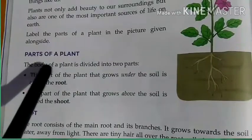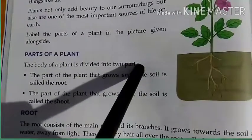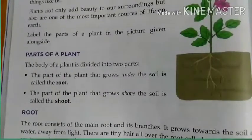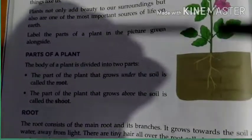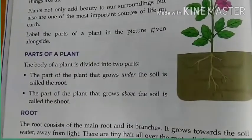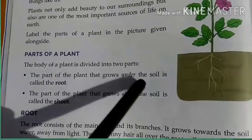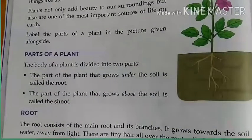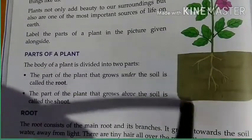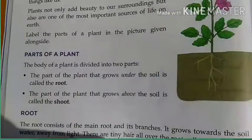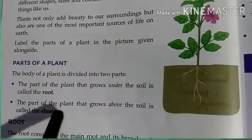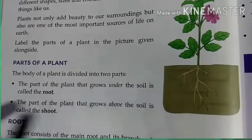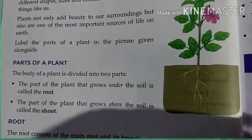Now let's study the parts of a plant. The plant is divided into two parts: one part which is inside the soil, and another part which is above the soil. The part of the plant that grows under the soil is called the root. The part of the plant that grows above the soil is called the shoot.